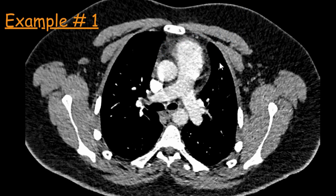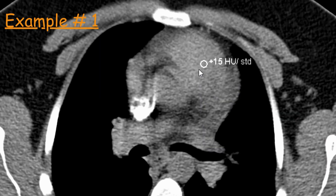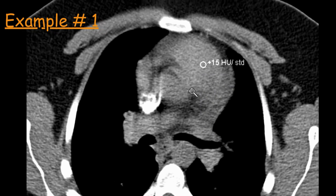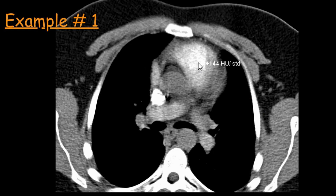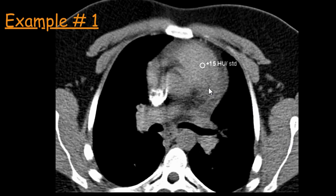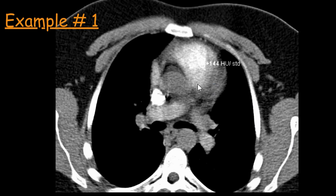So what do you think is the reason for this poor contrast opacification? There could be several reasons, but let's look at the images used to place the ROI for bolus tracking. I think this ROI is not placed on the pulmonary trunk — it looks somewhere probably just below the valve, just around it. So that's one reason, plus the ROI is quite small.